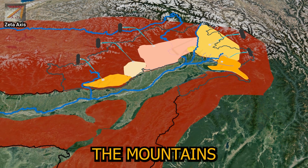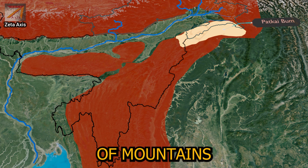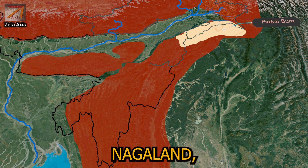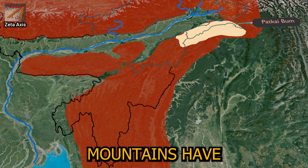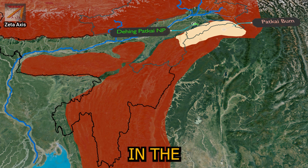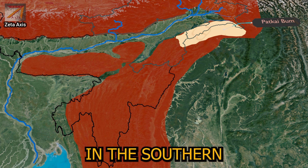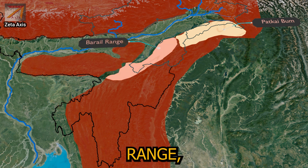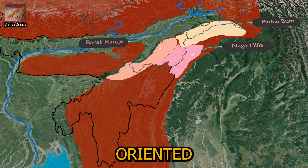Now let's see the mountains of the Purwanchal Himalayas. Patkai Bum mountains are a series of mountains on the Indo-Myanmar border, falling in the northeastern states of Arunachal Pradesh and Nagaland, and covering some part of Myanmar. The Patkai Bum mountains have a north-south orientation. Dihing Patkai National Park is located in Assam in the foothills of Patkai hills. In the southern direction, the Patkai Bum mountains are further divided into two ranges: the Barail range, which has a south-westerly direction, and the Naga hills, oriented southward.